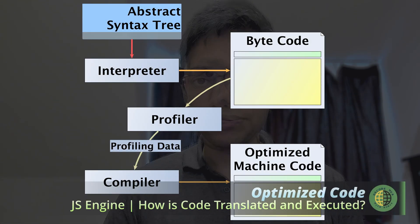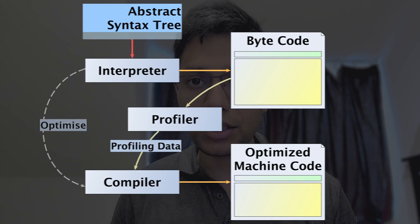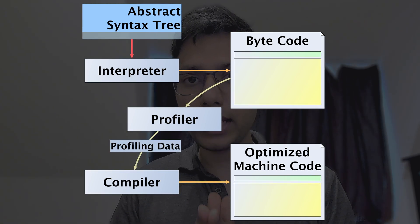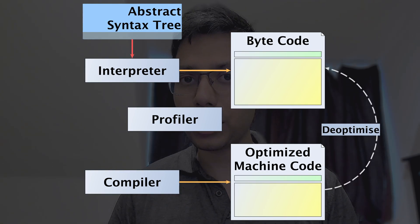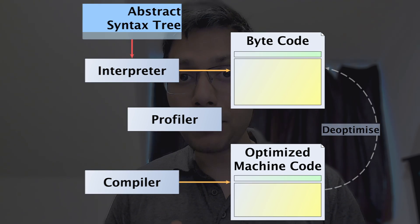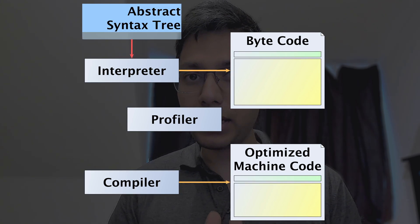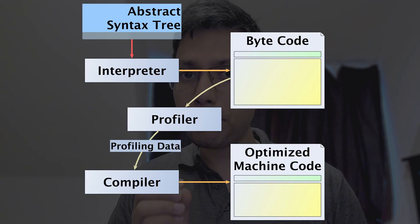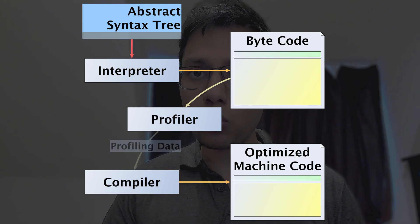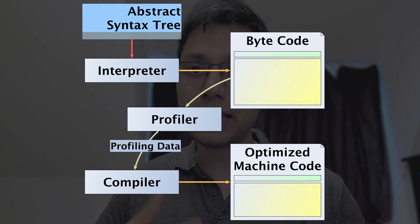Optimized code is the last step. The code has been transformed and optimized by the various components of the JavaScript engine to execute more efficiently. This can include reducing the number of instructions needed to execute a piece of code, removing redundant operations, and minimizing the amount of memory used. The optimization process typically occurs at runtime, with the profiler collecting important information about the code's execution and using it to generate more optimized code, which is then executed.